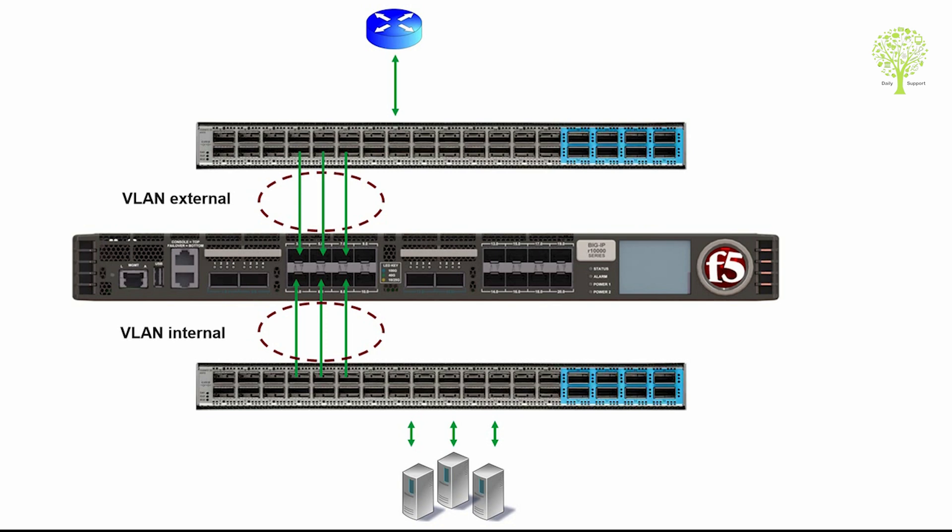You then associate each VLAN with the relevant interfaces or LAGs. The VLANs configured can be used by tenant systems running on the R-series. A typical VLAN configuration is one in which the system has two VLANs — external and internal — and one or more tenant BIG-IP system interfaces assigned to each VLAN.